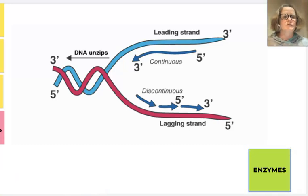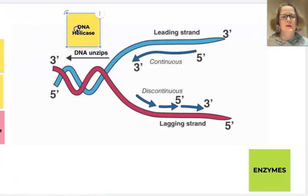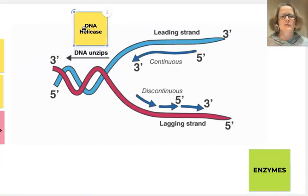There are several different enzymes involved in DNA replication. To unzip the DNA we use an enzyme called helicase. 'A-s-e' at the end of a word in biology indicates it's usually an enzyme, and the rest of the name tells you what it does. So DNA helicase is an enzyme that unzips the helix of DNA.